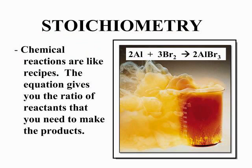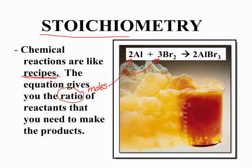Stoichiometry uses the balanced chemical equation, which is basically a recipe for the reaction. The balanced equation gives you the ratio of moles — these coefficients represent moles — of reactants and products that take place in the reaction. So using these and simple stoichiometry calculations, we will be able to solve for anything in a balanced chemical equation.